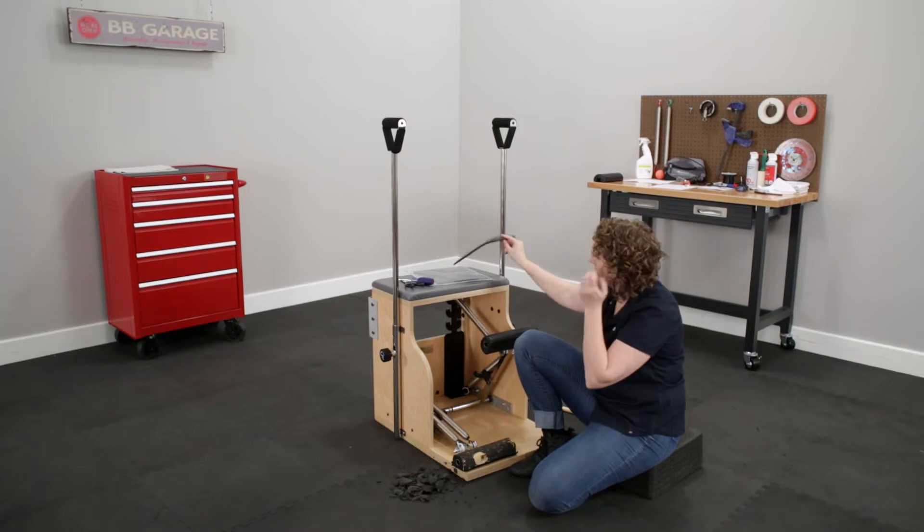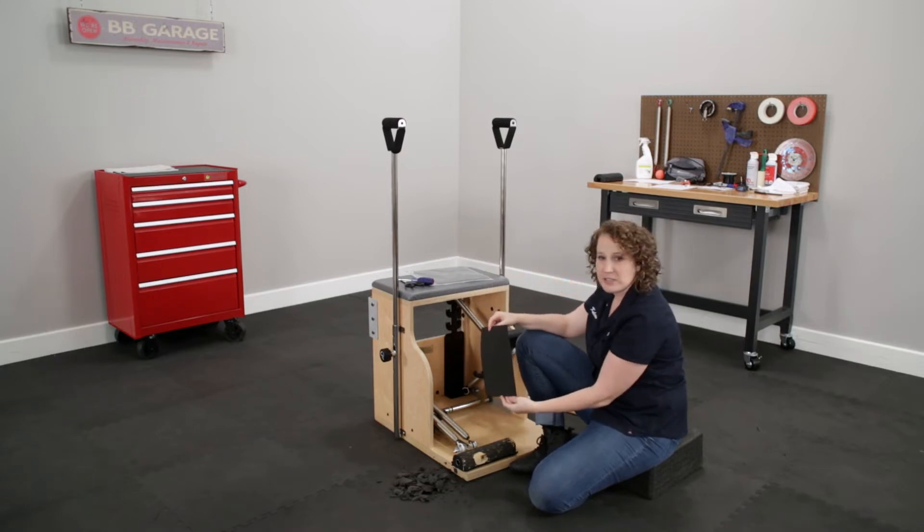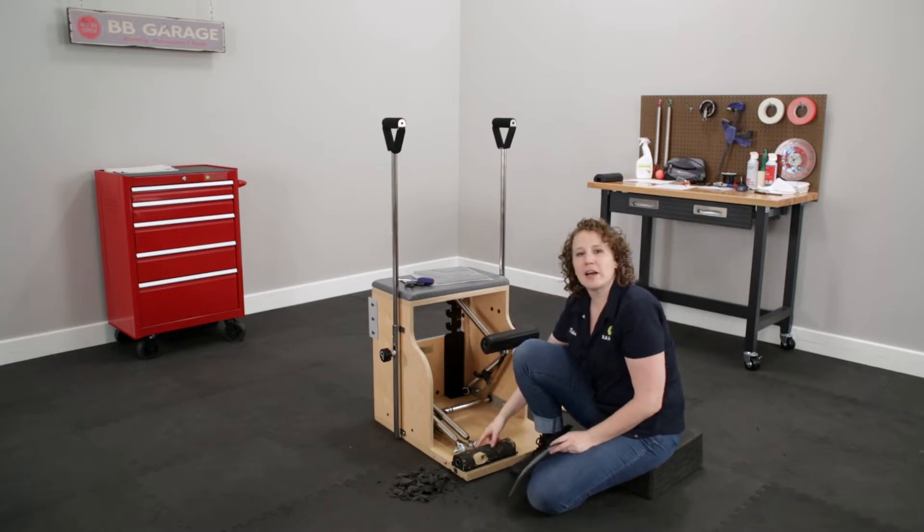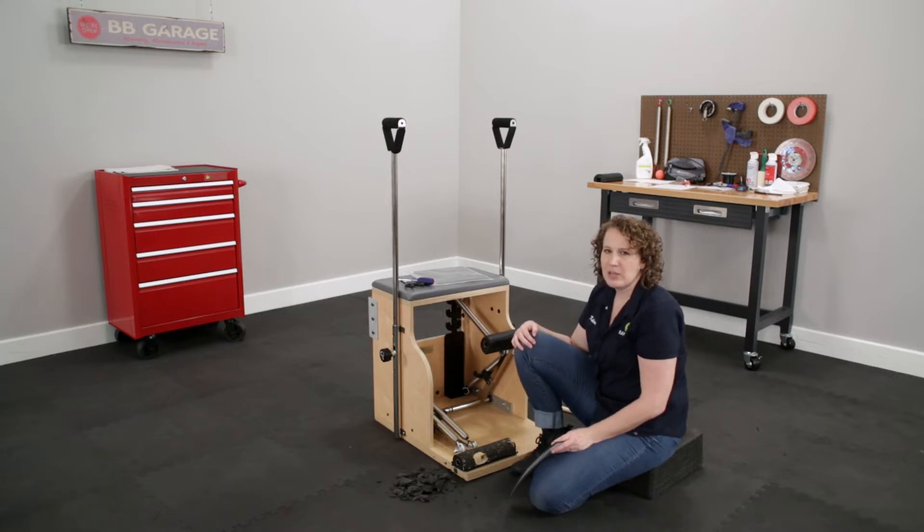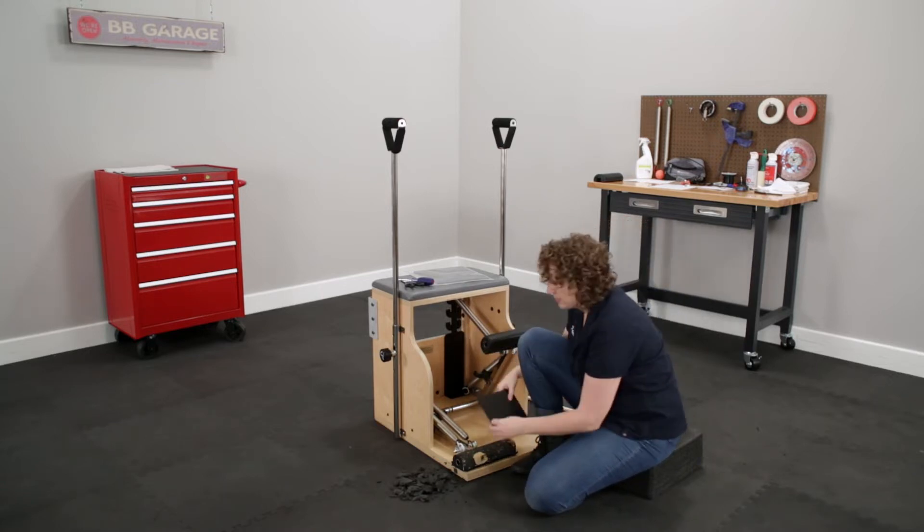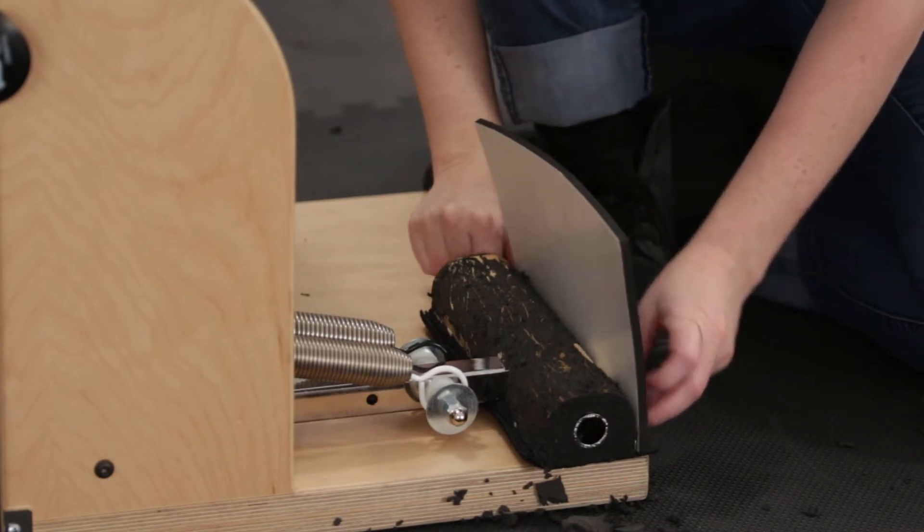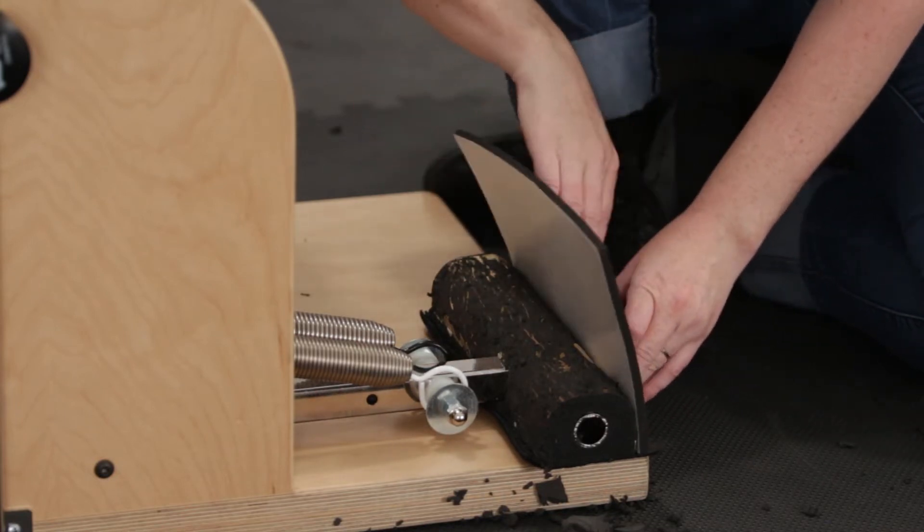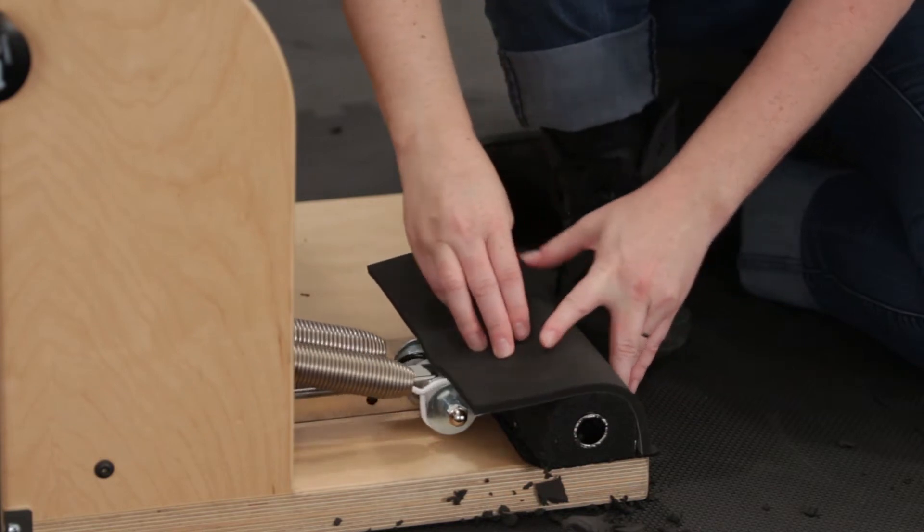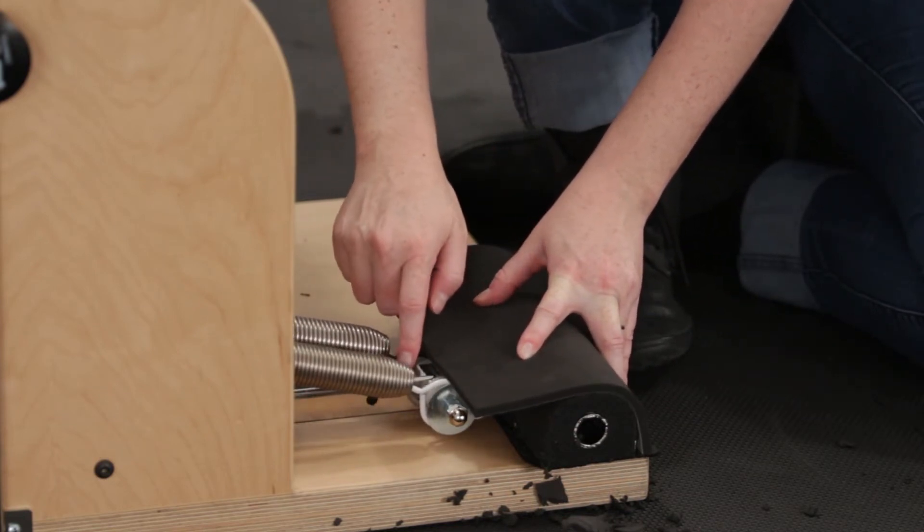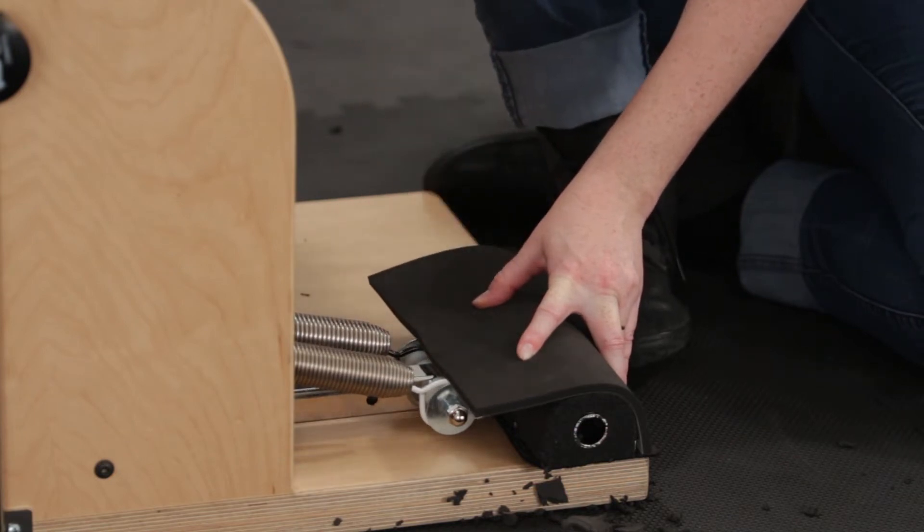So we're ready to put our neoprene pad back on. Our new one looks like this and you can see it's square, but the one we just took off had a slot in it for the pedal, so we need to cut the slot. So I'm going to eyeball it by lining up the front edge, wrapping it over, and then looking at where this silver tube is.